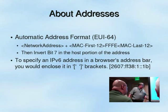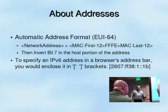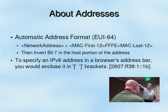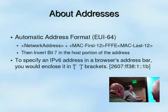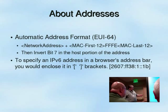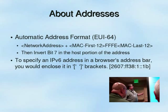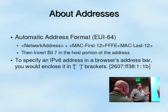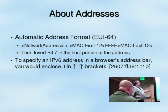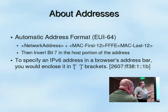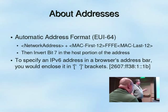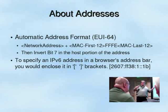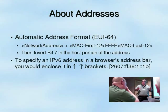We also talked about automatic addresses. EUI-64 is the act of taking a standard MAC address and converting it into an IPv6 address. This is done by taking the network address — the first 64 bits — then taking the first 24 bits of the MAC address, adding FFFE in the middle, and appending the last 24 bits of the MAC address. To make it more difficult, we also have to invert the seventh bit of the host portion of the MAC address. This allows the system to automatically define its link local address and get a starting point for its global address.